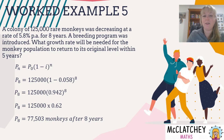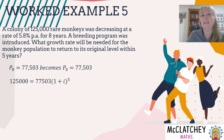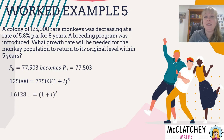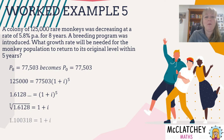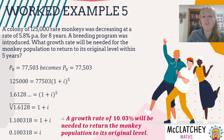Now 77,503 monkeys becomes our new principal. We want to reach 125,000 in five years using the compound interest growth formula: 125,000 = 77,503 × (1 + i)⁵. Dividing both sides by 77,503 gives (1 + i)⁵ = 125,000 / 77,503. Taking the fifth root of both sides isolates (1 + i), then subtracting 1 gives i = 0.100318. Converting to a percentage: a growth rate of approximately 10.03% per annum is needed to return the monkey population to its original level within five years.